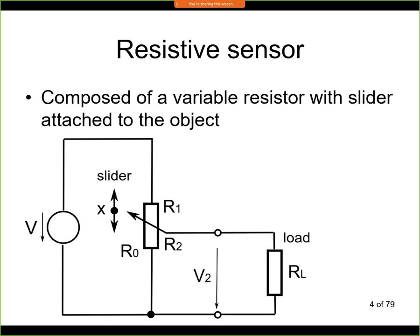The first sensor is a resistive sensor, which is nothing else than a variable resistor — you are detecting changes of electrical resistance. The output voltage V2 will be a function of position X. The object we are measuring is connected to the slider, either spring-loaded or via a screw and thread. There is a direct mechanical connection, and as the slider moves with the object, the position X changes, moving the slider up and down.